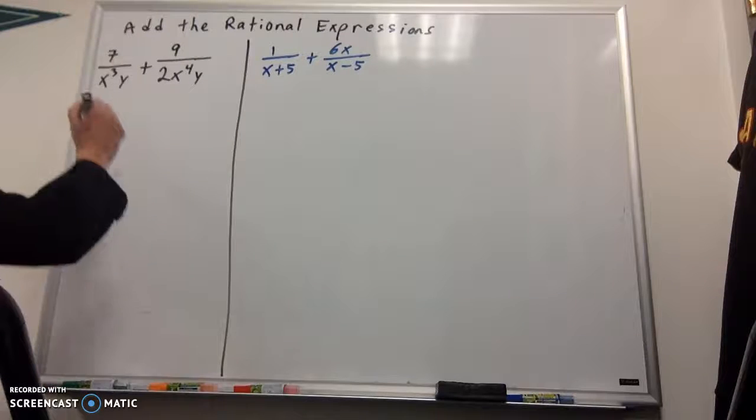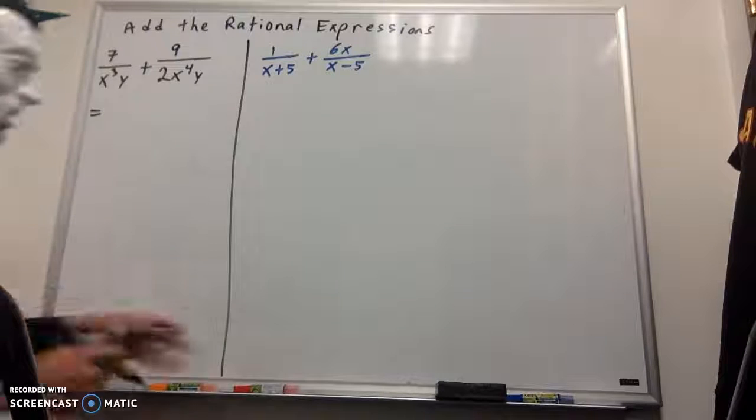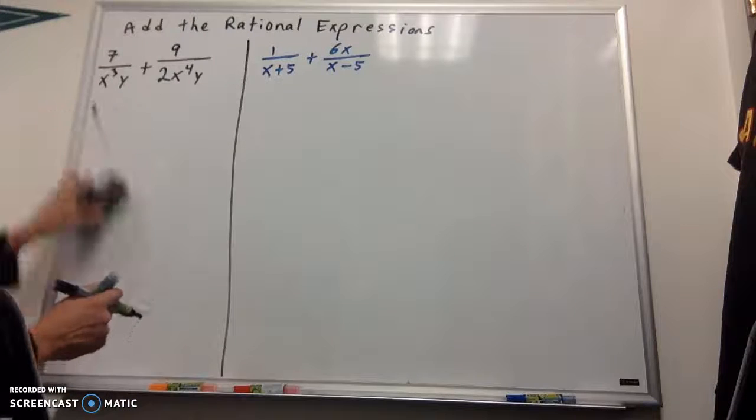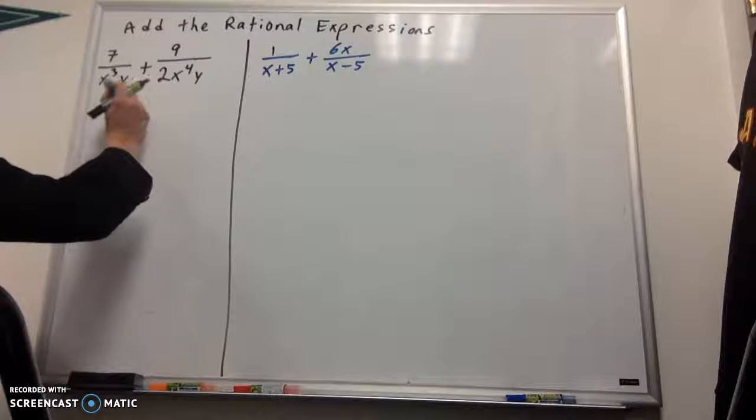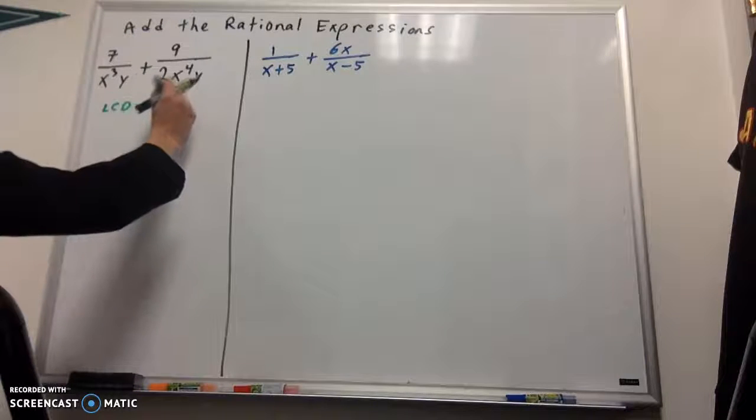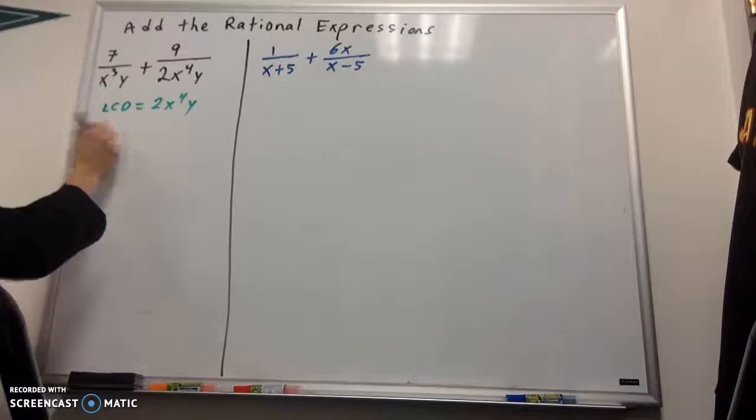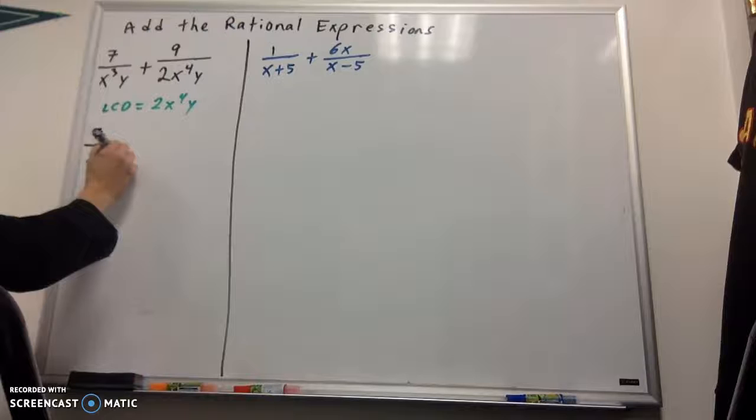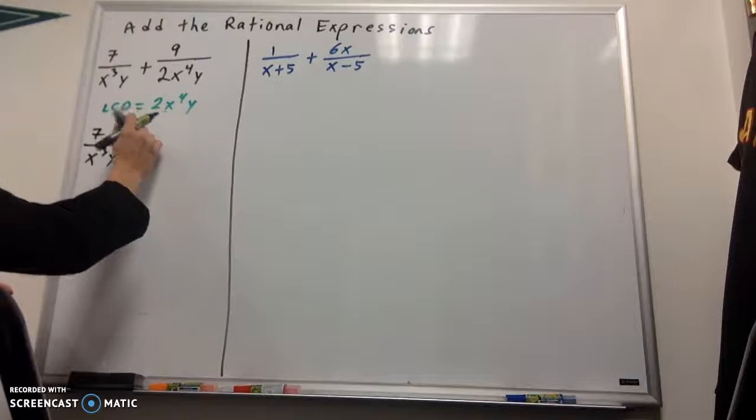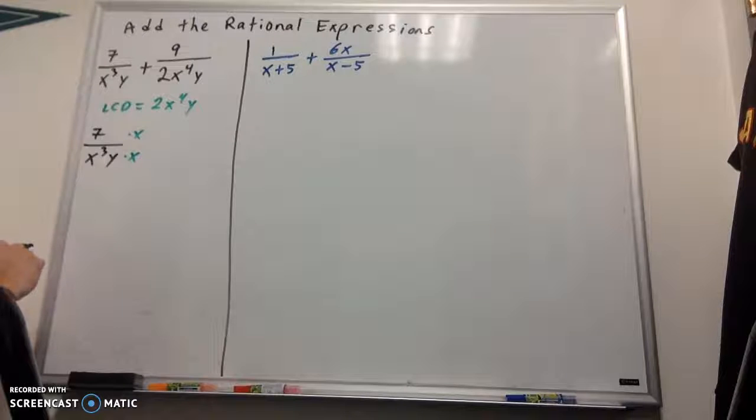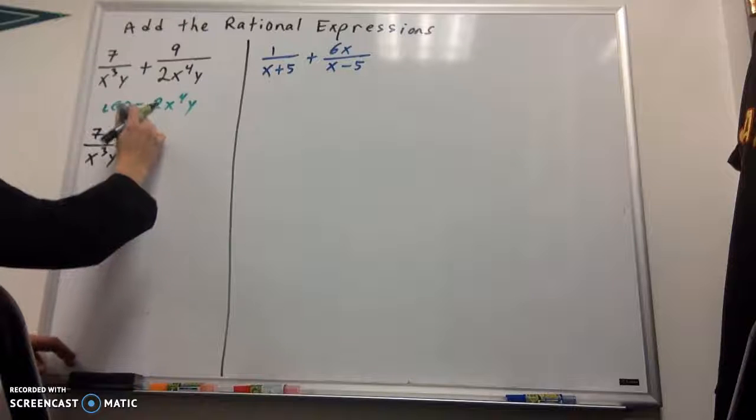These two examples aren't going to be too bad. In this first one, my least common denominator, that's what we need to find first, is going to be 2x to the fourth y, right? So, what's missing in the first fraction? It's missing an x, so I'll multiply top and bottom by an x. It's also missing a 2, so you know what, I should have put a 2 out in front there.